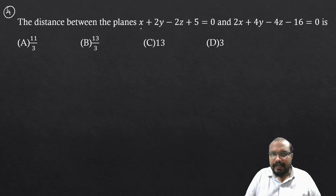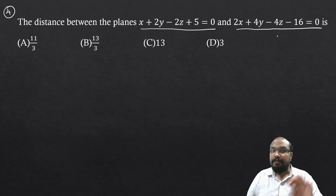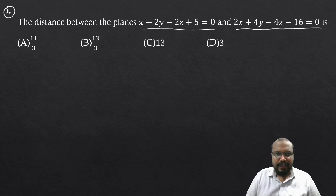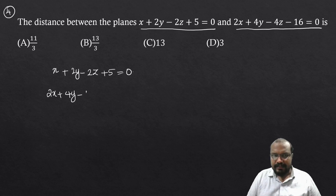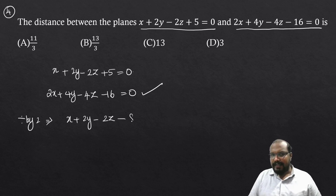Question number four: The distance between the planes x + 2y - 2z + 5 = 0 and 2x + 4y - 4z - 16 = 0. We are finding the distance between two planes. The second equation can be rewritten: dividing by 2 gives x + 2y - 2z - 8 = 0.